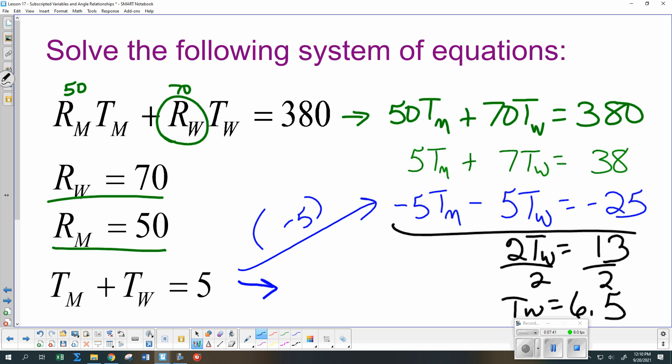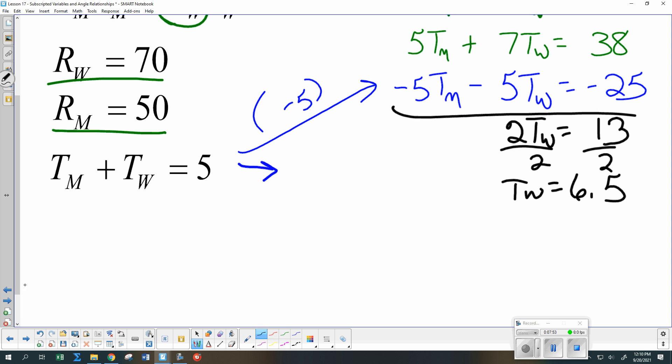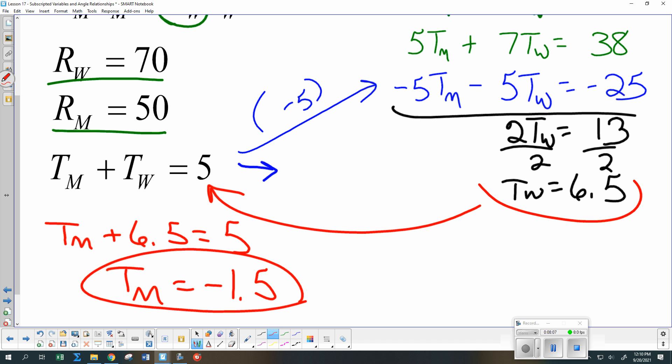Okay, you're algebra 2. You're not second grade. It's okay to have numbers that are fractions and decimals. We don't always get real nice numbers. Have not finished the problem because we still need TM. So come back here. And TM plus 6.5 is 5. So TM has to be negative 1.5. So we just circle our answers.